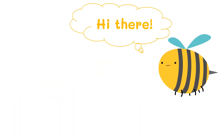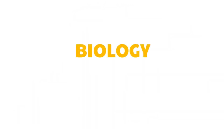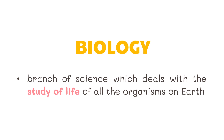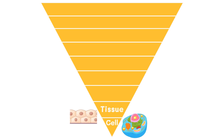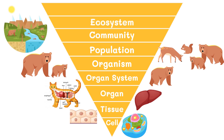In this video we will be learning about the levels of biological organization. Biology is the branch of science which deals with the study of life of all the organisms on earth. It is coined from two Greek words: bios, which means life, and logos, which means study. All living things exhibit a unique and complex hierarchical organization, arranged in ascending order from the lowest to the highest level — cells, tissues, organs, organ systems, organism, population, community, ecosystem, and biosphere.